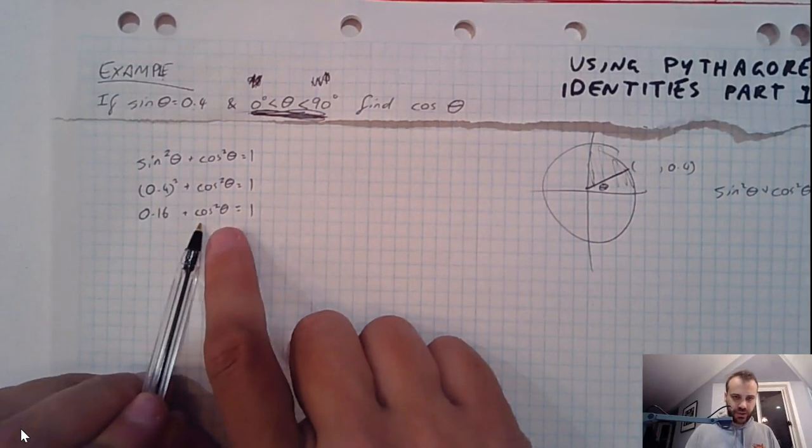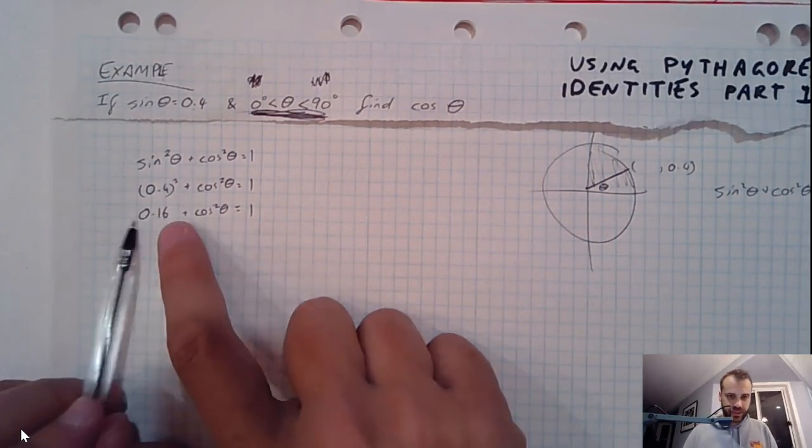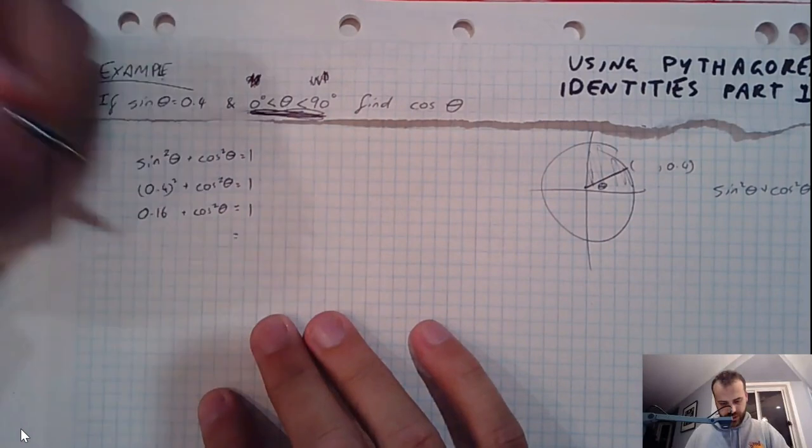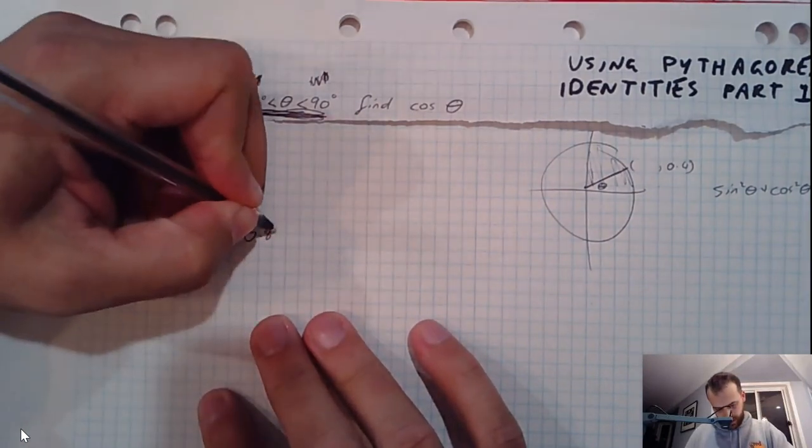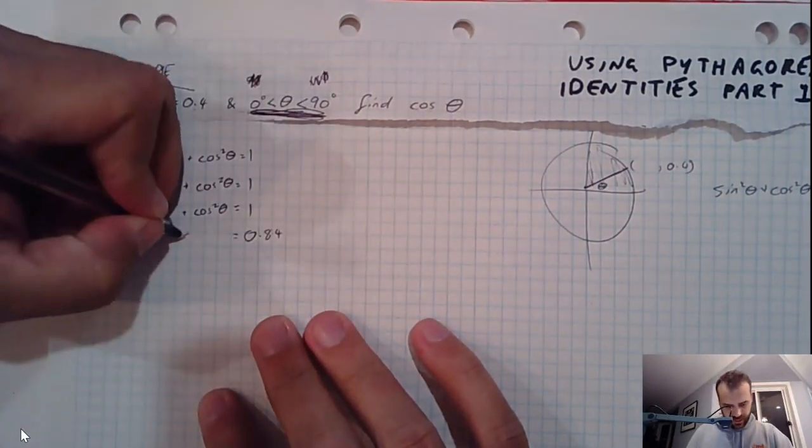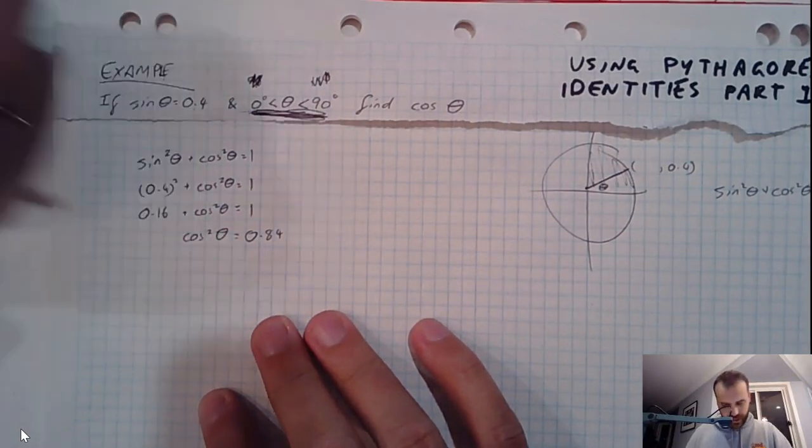Now I can get cos squared theta by itself, that's what I'm aiming for, so I'm going to subtract 0.16 from both sides, and that'll give you 0.84 on this side, cos squared theta.